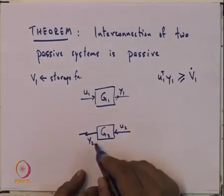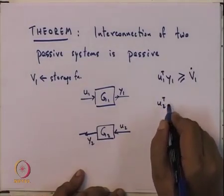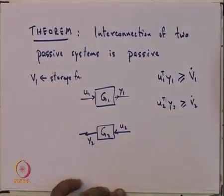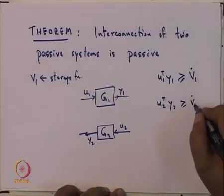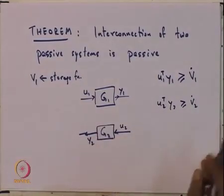So, V1 is like the amount of energy stored in G1 roughly, and so U1 transpose Y1 is like the amount of energy supplied and the energy supplied is greater than equal to the rate of change or the power supplied is greater than equal to the rate of change of the stored energy in the first system. Now, this one being passive, essentially you have a similar statement: U2 transpose Y2 must be greater than equal to V2 dot and this V2 dot is the storage function of the second transfer function.